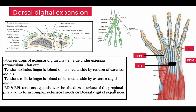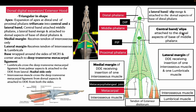These tendons expand over the dorsal surface of the proximal phalanges to form a complex extensor hood, also known as the dorsal digital expansion. Before dealing with the dorsal digital expansion, we need to identify the bones: the metacarpal bone, the proximal phalanges (shown by the black line), the middle phalanges, and the distal phalanges. The joint between the metacarpal and proximal phalanges is the metacarpophalangeal (MCP) joint; between proximal and middle phalanges is the PIP joint; between middle and distal phalanges is the DIP joint. The tendons of extensor digitorum are also visible here.